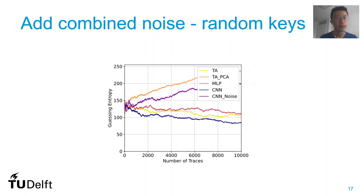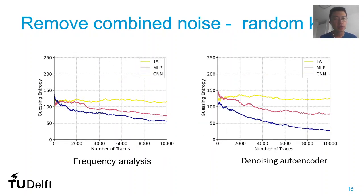We also verify the denoising autoencoder's performance by denoising traces with random keys. To retrieve the correct keys from leakage traces, we first train the models with leakage from random but known keys, then use the trained models to attack the leakage and retrieve the key. The guessing entropy of noisy traces fluctuates above 100 regardless of the number of traces, indicating all five attack methods are unsuccessful. On the other hand, guessing entropy shows improved performance with frequency analysis and the denoising autoencoder — in the best cases, the denoising autoencoder doubles the attack performance compared to its counterpart. We conclude that the proposed denoising autoencoder can denoise leakage in both fixed and random key scenarios, with results especially good when using CNN as the attack mechanism.